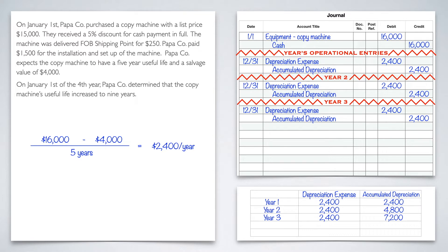Originally it was five years, but then in the fourth year we realized we're going to keep it a little bit longer — an additional four years. So at that moment, we need to recalculate. We're not going to go back and fix everything in the past; we're just going to start from this moment forward. So we need to do the recalculation for the fourth year.